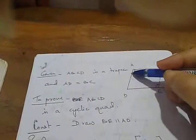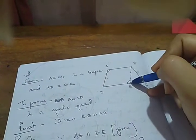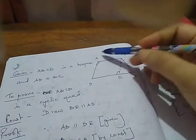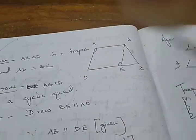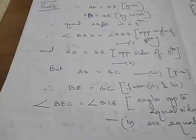Since ABED is a parallelogram, opposite angles are equal, so angle BAD equals angle BED. Also, opposite sides of a parallelogram are equal, so AD equals BE. But in our question, AD equals BC is given. Therefore BE equals BC. In triangle BEC, since BE equals BC, the angles opposite to equal sides are equal — so angle BEC equals angle BCE.